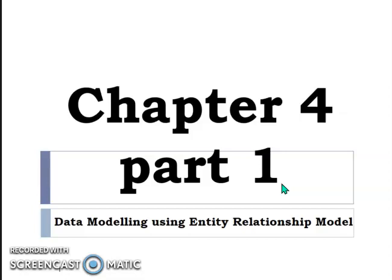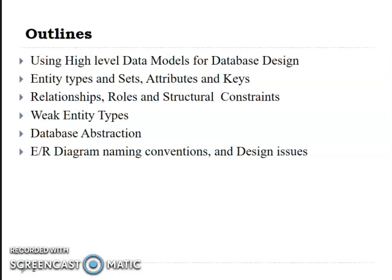Let's start the first concept of Chapter 4 Part 1 about data modeling. The outline of Chapter 4 covers: first, high-level data modeling or database design; entity types, sets, and attributes; third, relationships, roles, and structural constraints; fourth, weak entity types; fifth, database abstraction; and last, entity relational diagram naming conventions and design issues.